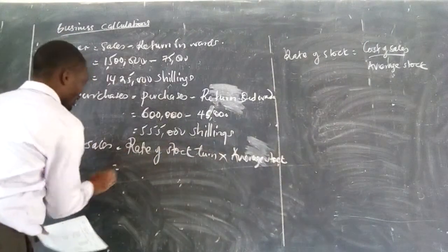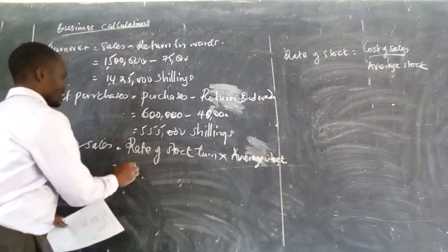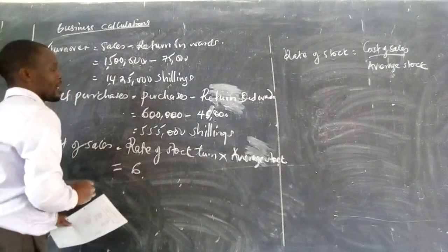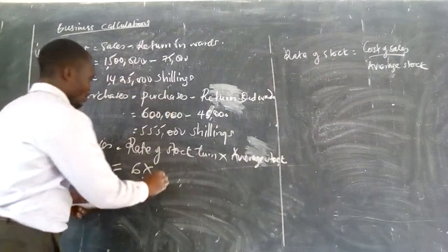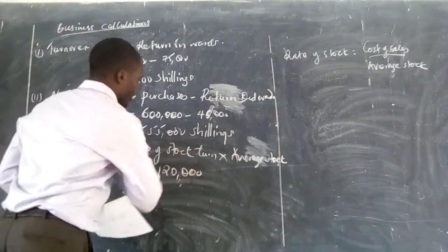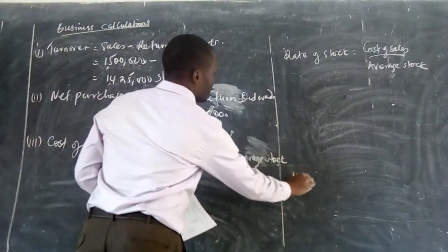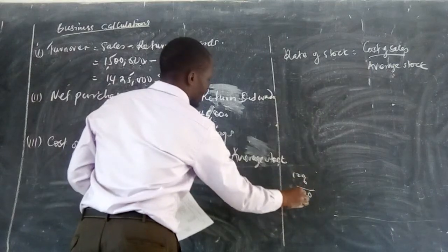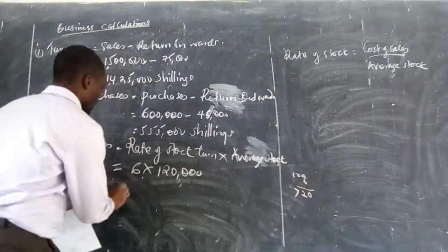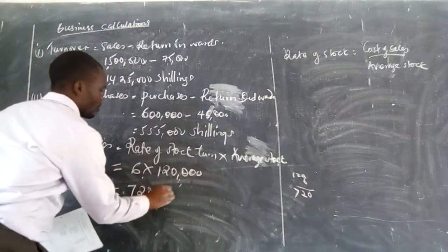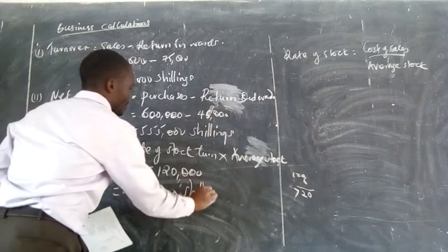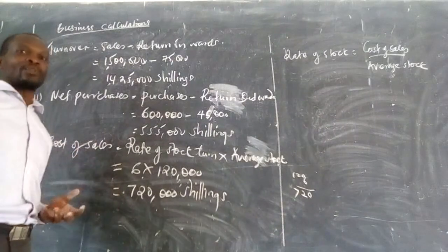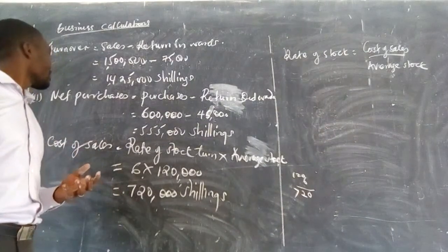Substituting in: rate of stock turnover was given as 6 times, and average stock was 120,000. So 6 multiplied by 120,000 gives us 720,000 shillings. That is our cost of sales.